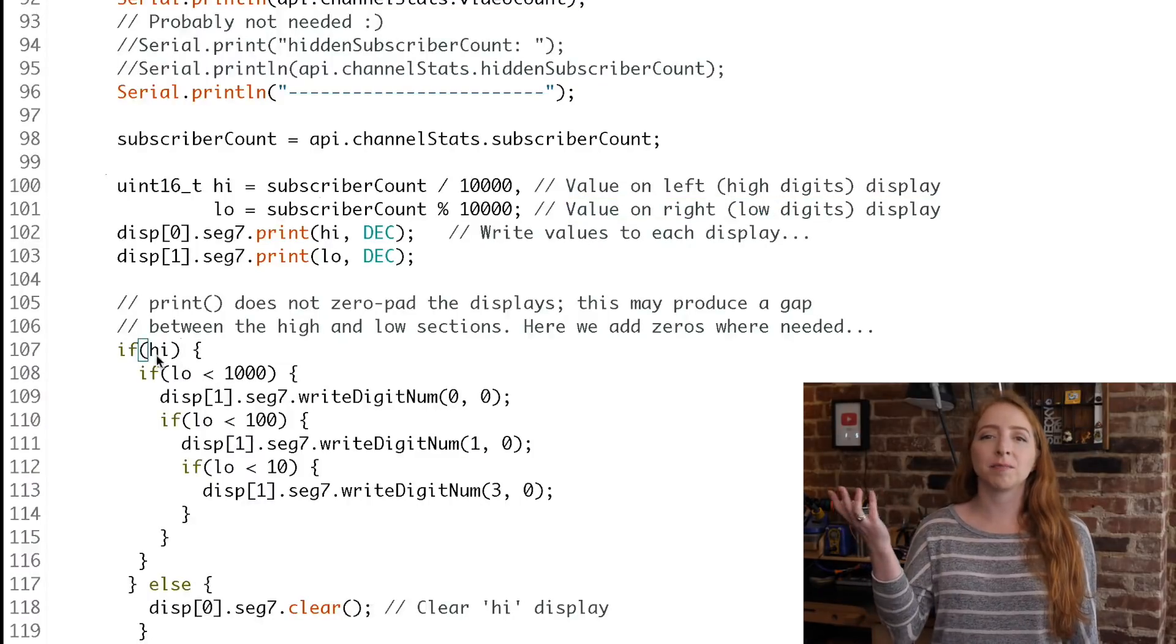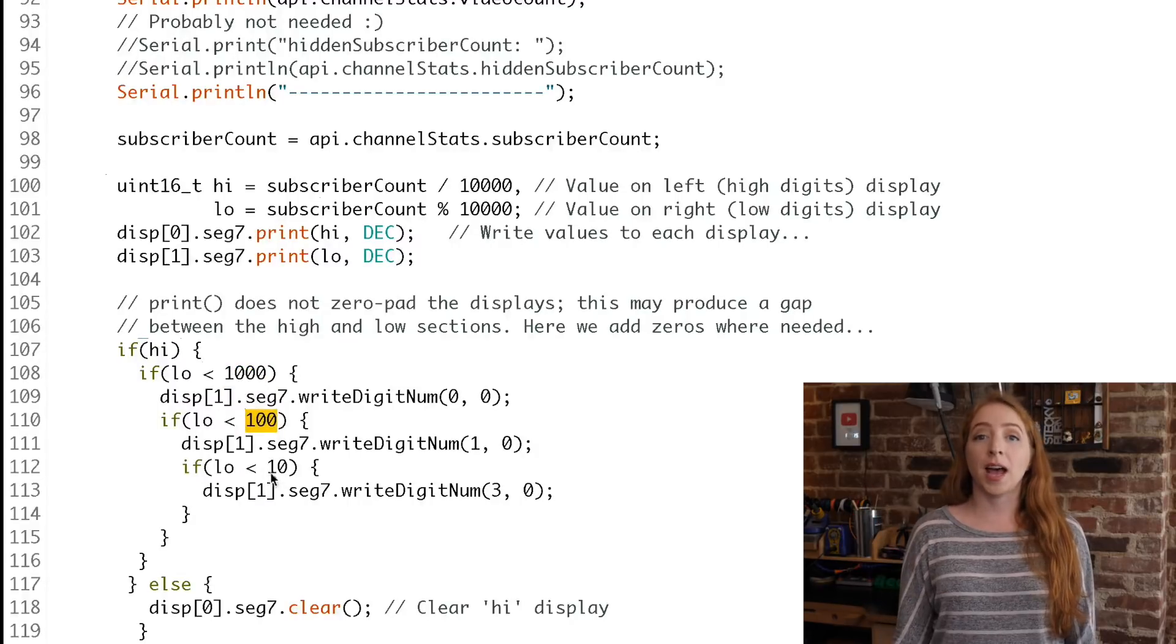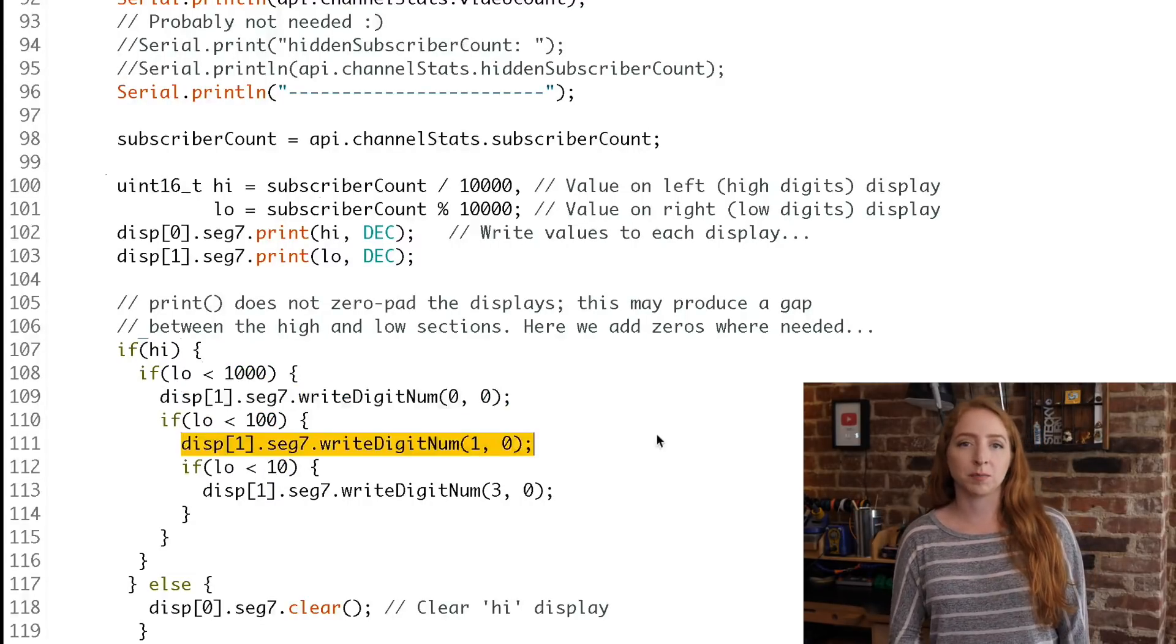If the left display has something to display and the second number is under 1,000 or 100 or 10, we need to add some zeros to link the digits with the left-hand display.